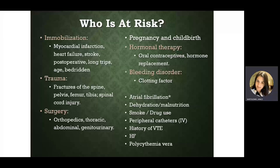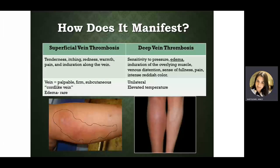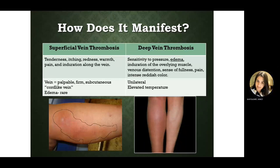How does this manifest? It manifests differently depending on whether it's superficial or deep. If it's superficial, you'll possibly see a palpable, firm, cord-like structure with redness, warmth, and discomfort or tenderness. Edema is not common with superficial clots or is very mild. However, with deep vein thrombosis, you do have edema, a feeling of pressure or heaviness, and pain. It is unilateral.